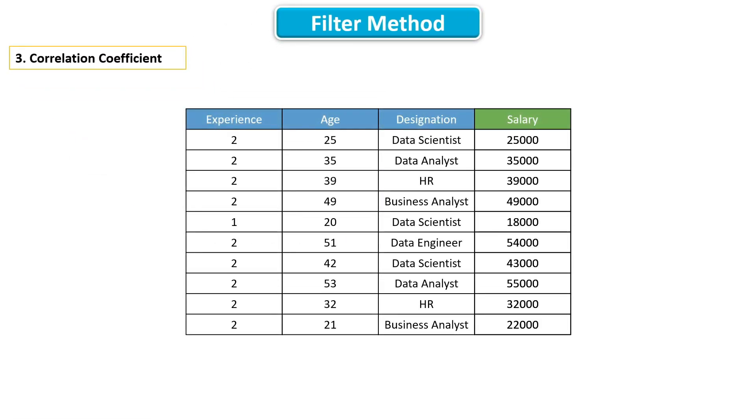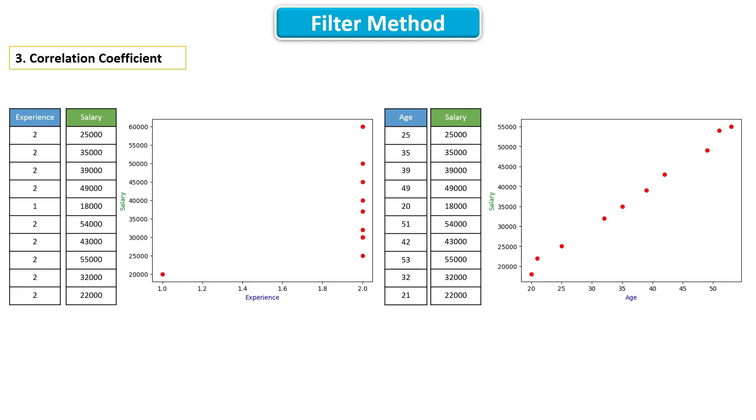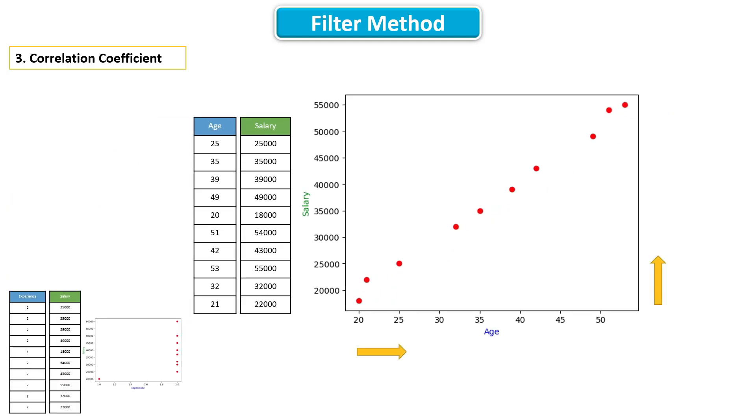The idea behind correlation coefficient is, pick all the numeric features and check the correlation between all the numeric features and the target. If the correlation is high, then that feature is important. How? If you see here, as age increases, salary also increases, which indicates that we can tell something about salary using age. This is what correlation also tells us.